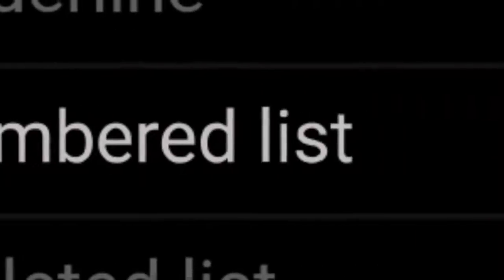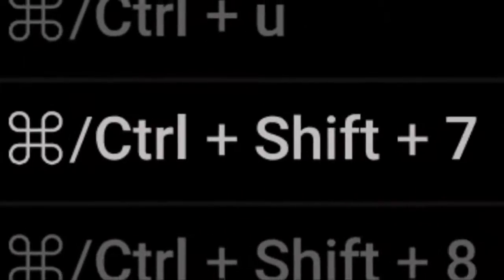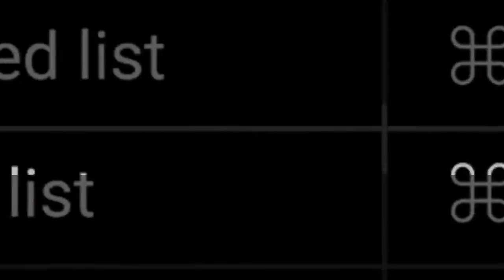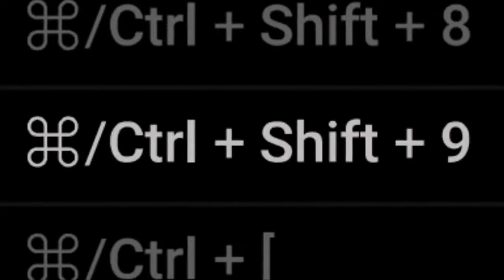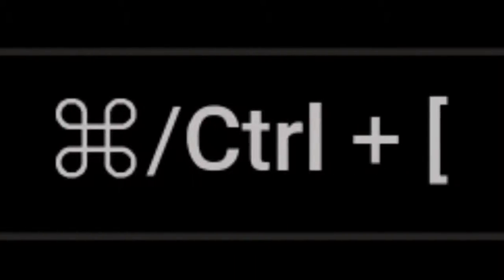For numbered list, press Command or Control Shift 7. For bulleted list, press Command or Control Shift 8. For code, press Command or Control Shift N. For indent less, press Command or Control left square bracket.